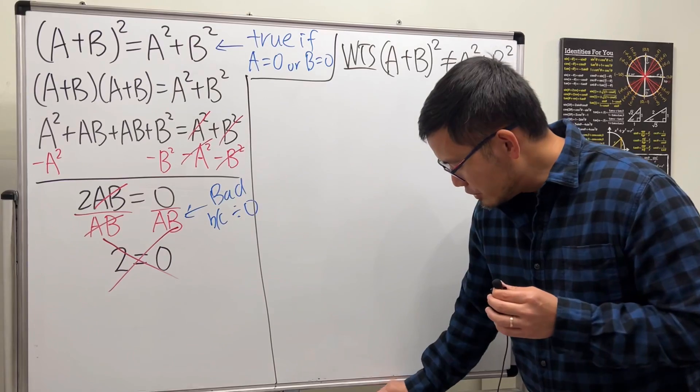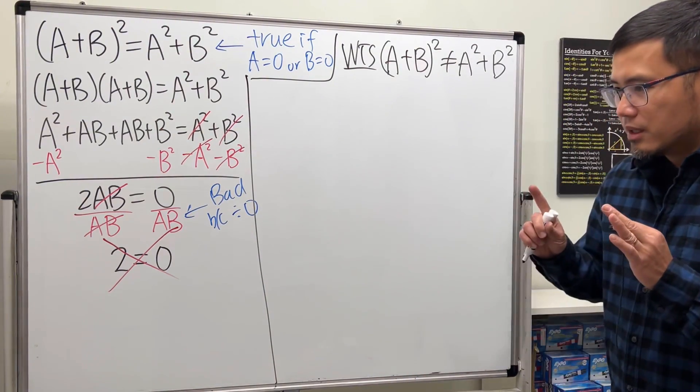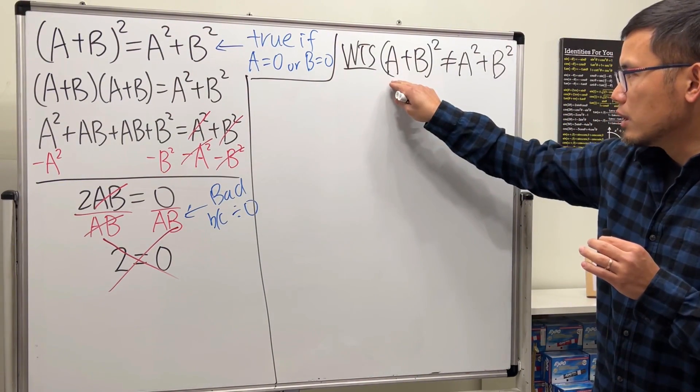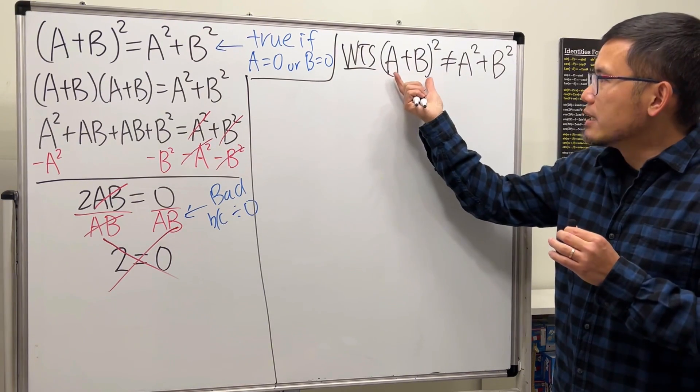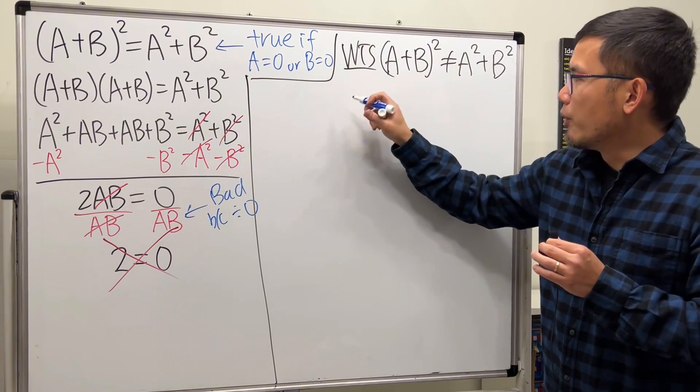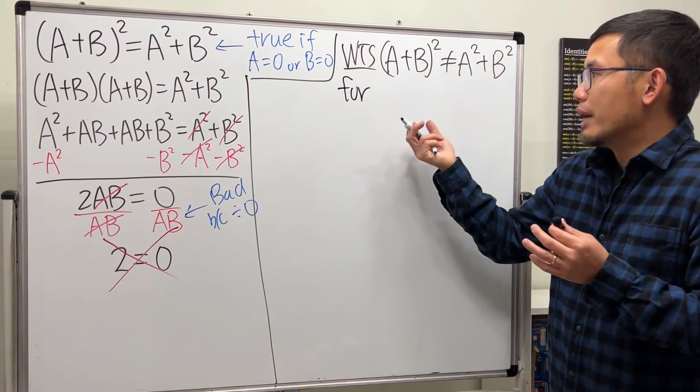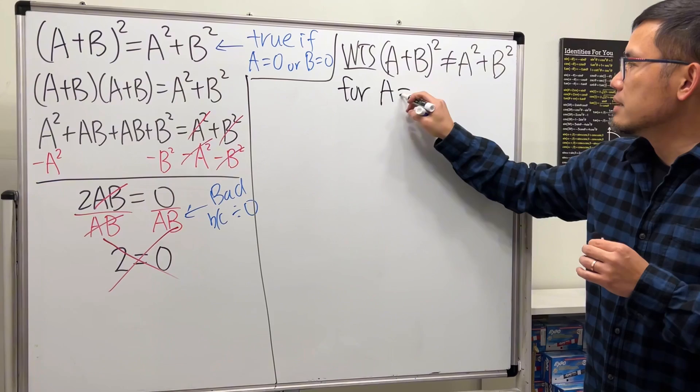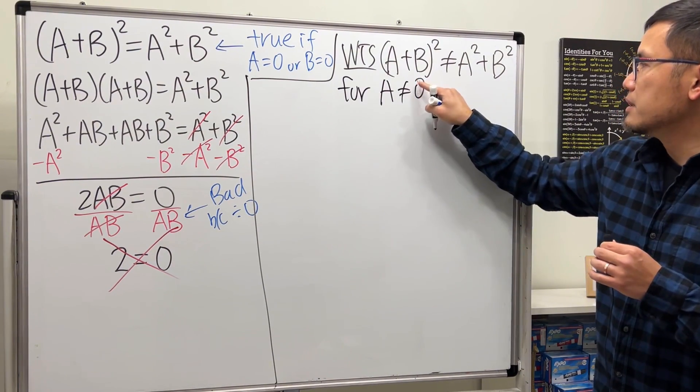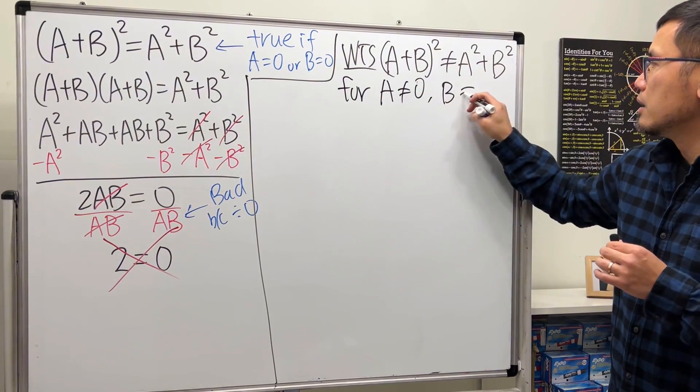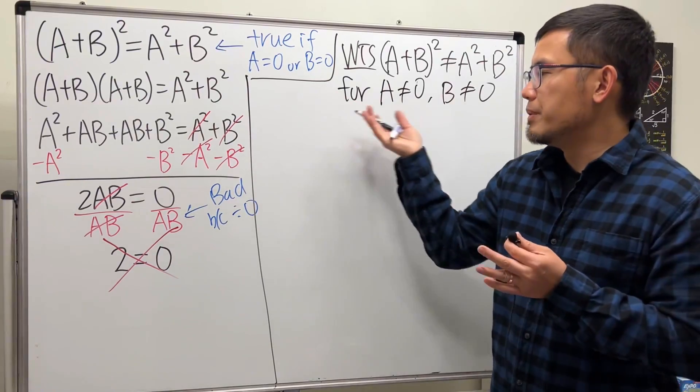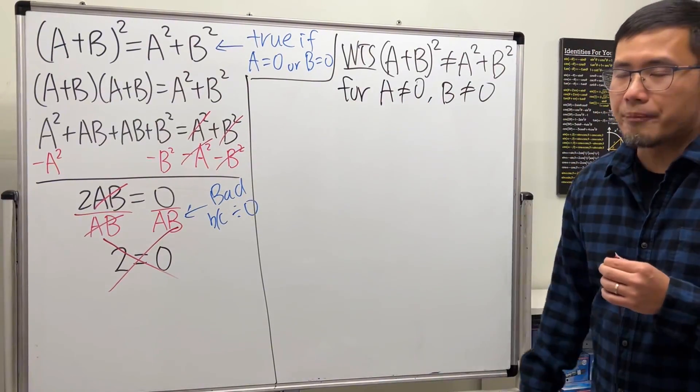One thing to mention, though, the original post, if he or she wanted to show this right here, you have to say this is not true for, let's say, I'll just say for non-zero a and b. So, a is not equal to 0, and b is not equal to 0. Right? And of course, again, a and b are real numbers, so let me just not write that down.